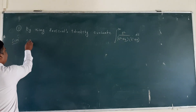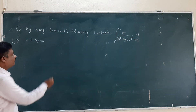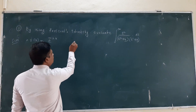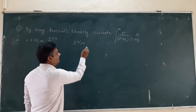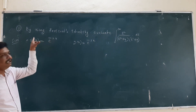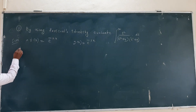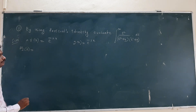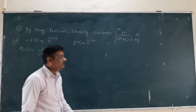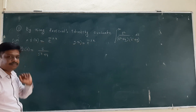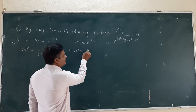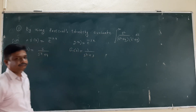First I will define f of x. If I observe the equation, we are having two terms: one is t upon t square plus 4, another is t upon t square plus 9. So for that, I will define two functions. f of x as e to the power of minus 2x, and g of x as e to the power of minus 3x, since 9 is 3 square. The Fourier Sine Transform of e to the power of minus 2x is s upon s square plus 4.